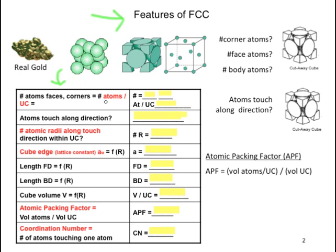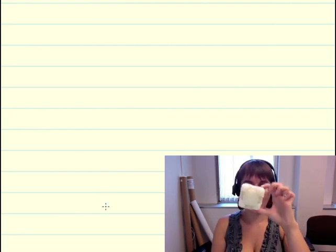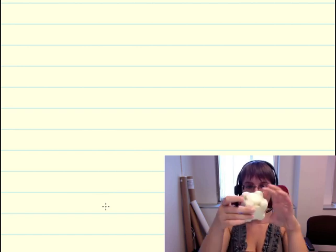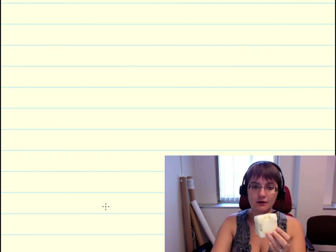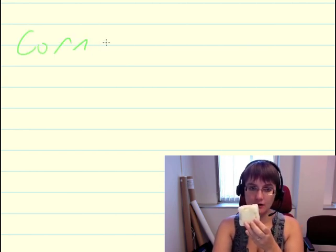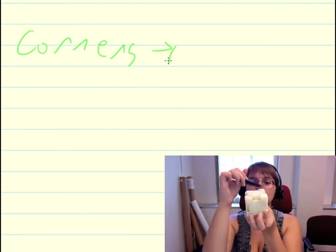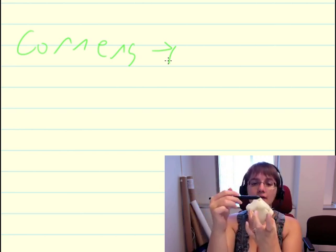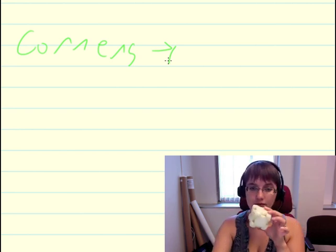The first thing is finding the number of atoms per unit cell. In order to do that, we need to count the number of atoms from the faces and the number of atoms from the corners. To help us, we have a visual aid — a FCC unit cell in three dimensions. Let's count the corners: one, two, three, four, five, six, seven, eight. So, we have eight total corners.